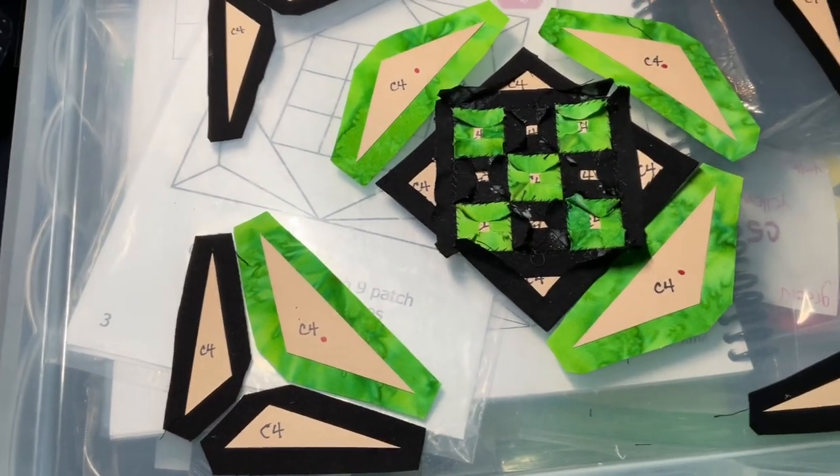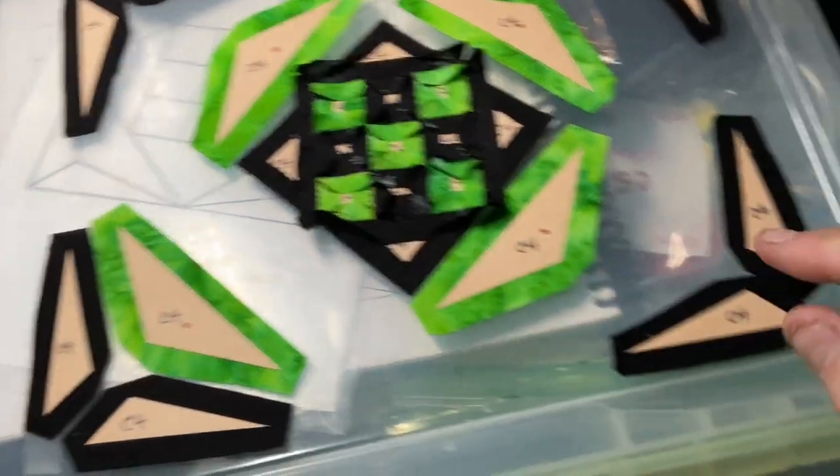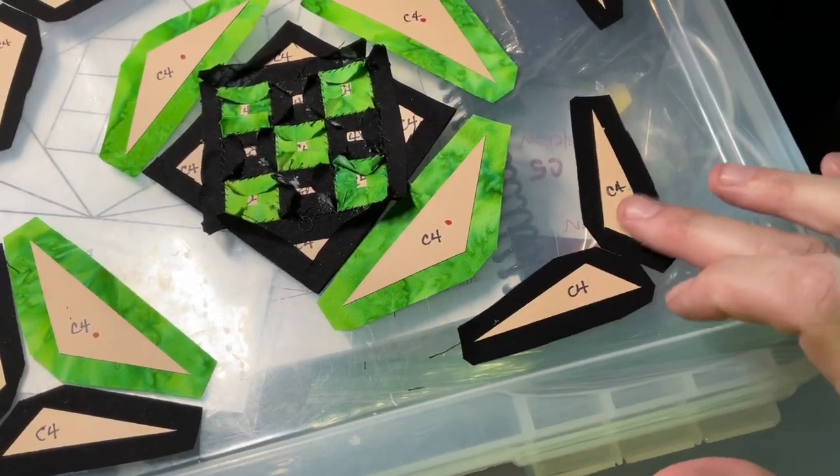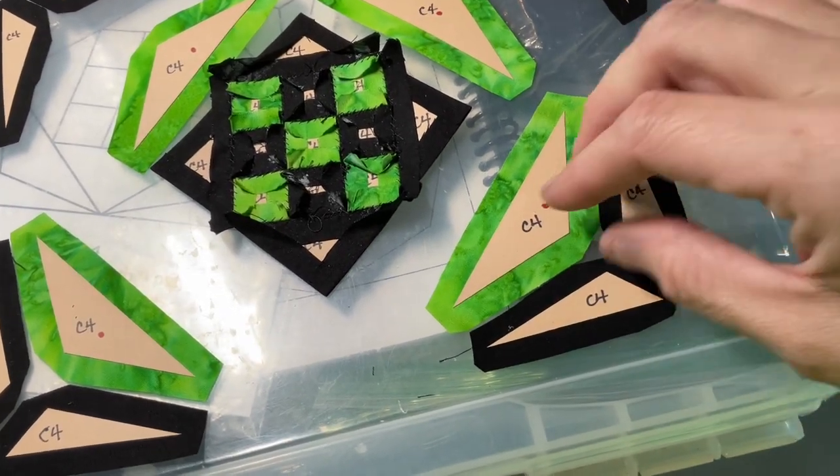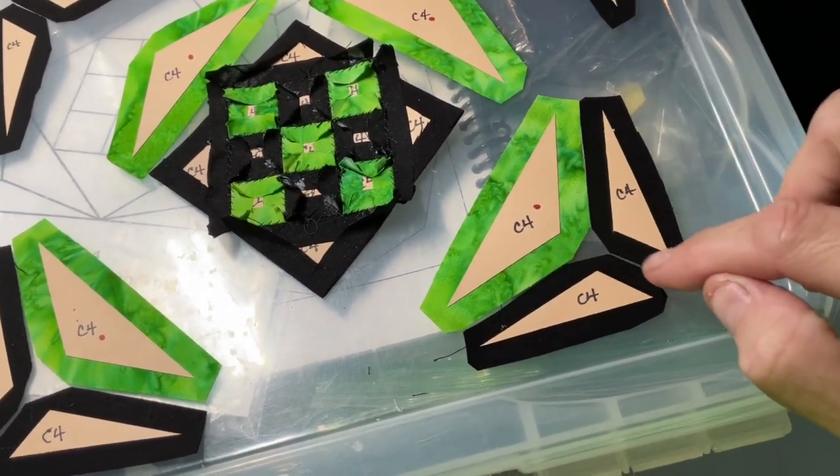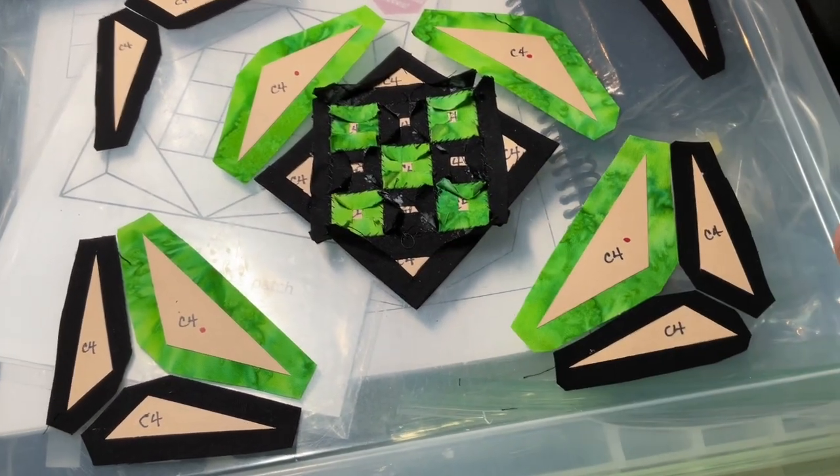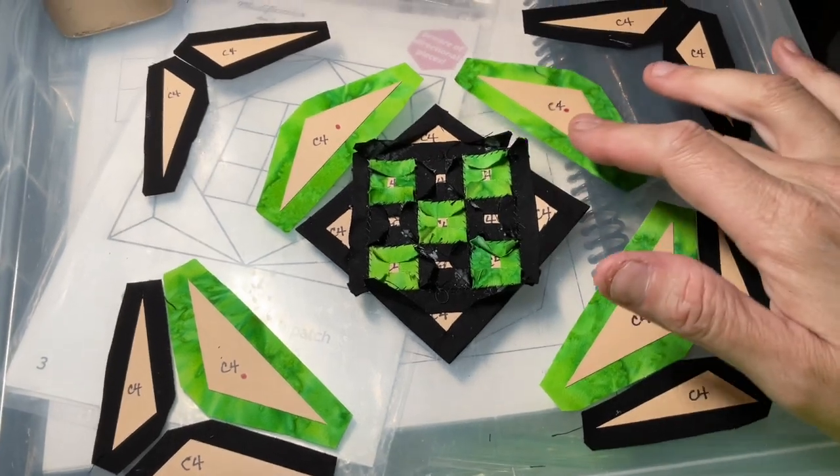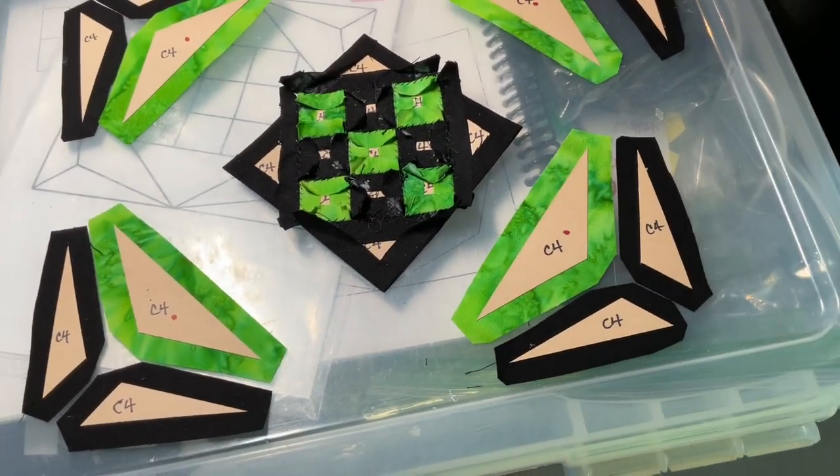Normally I would just go ahead and attach these green pieces, but because of the way that these are shaped, I'm going to go ahead and put all three of these together first. That way I can better control the way this fits, rather than having to deal with it in the whole block assembly. So let me get one of these corners basted and assembled and we can go from there.